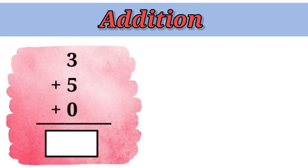Next, we have 3 plus 5 plus 0. Now, let's throw sticks. 1, 2, 3. 1, 2, 3, 4, 5. 0. 0 means what? 0 means nothing. So, there will be no sticks.